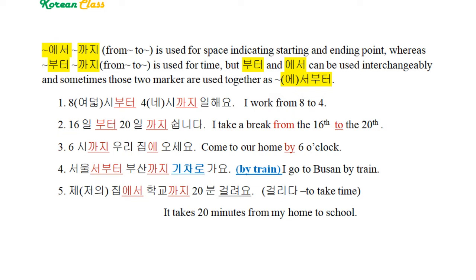Number 1: 8시부터 4시까지 일해요. (I work from 8 o'clock to 4 o'clock.) Number 2: 16일부터 20일까지 쉽니다. (I rest from the 16th to the 20th.) Number 3: 6시까지 우리 집에 오세요. In this case, 까지 means 'by', so: come to my house by 6 o'clock.